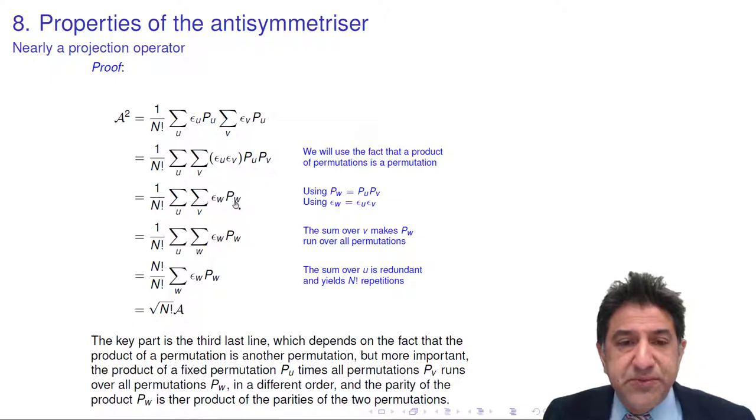And the phase of that permutation is simply the product of the two phases or signs of the two individual permutations, ew. So if they're both odd, that would be an even permutation, plus one. If they're both even, they stay even. If one's even, one odd, this would be a negative sign. And that's exactly what we expect.